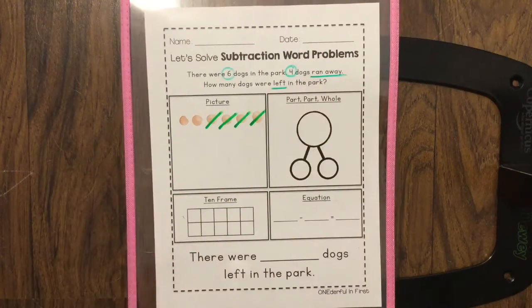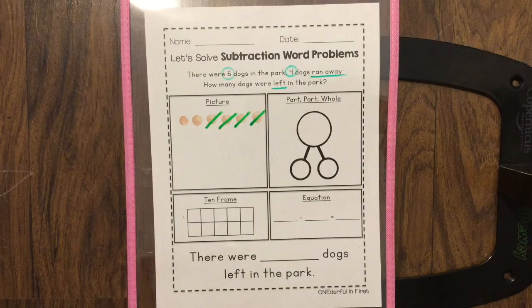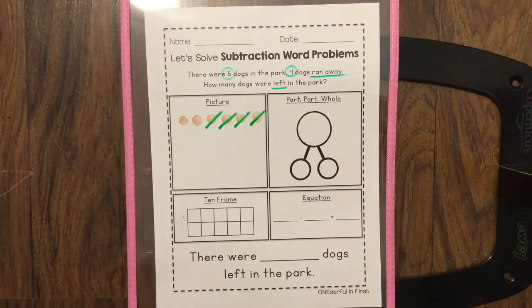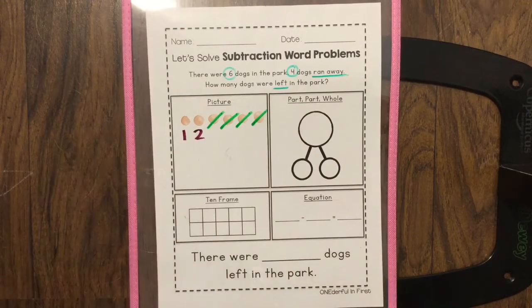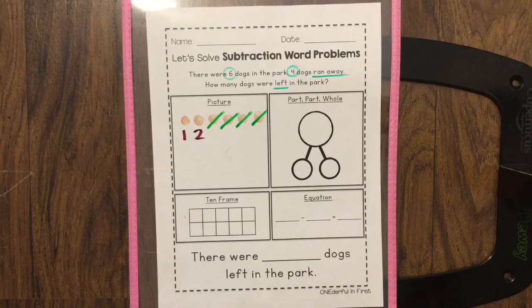Now I have to count how many dogs are still left in the park. One, two. So we know that there's two dogs left in the park.